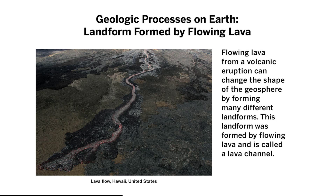Geologic Processes on Earth — Landforms formed by flowing lava. Flowing lava from a volcanic eruption can change the shape of the geosphere by forming many different landforms. This landform was formed by flowing lava and is called a lava channel. Notice that this landform was formed by flowing lava.